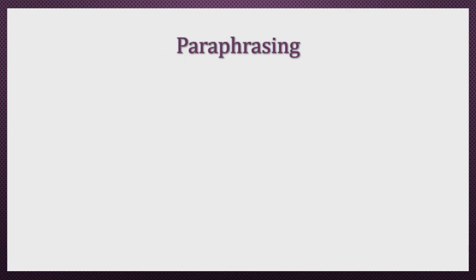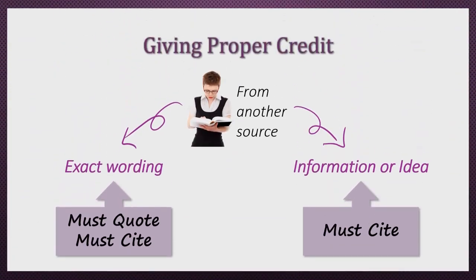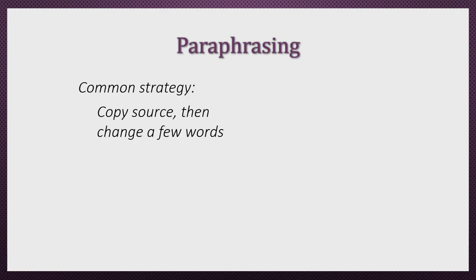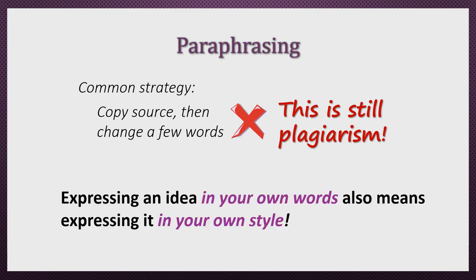Which takes me to paraphrasing. Paraphrasing means using your own words to express ideas obtained from other sources. Remember, anything that comes from another source needs to be cited. So even though you're rephrasing the information in your own words, you still took it from the original source and therefore you must cite it. One common strategy students mistakenly use is to copy a sentence from the original source, change a few words, and call it their own. Well, this is still plagiarism — one of the more common forms of unintentional plagiarism. When we say to paraphrase is to express an idea in your own words, we don't mean literally just the words, but also the style.